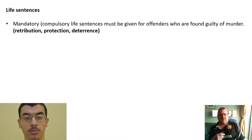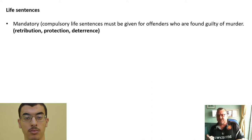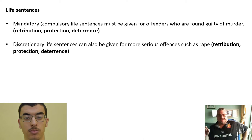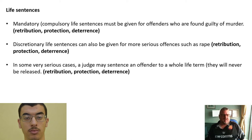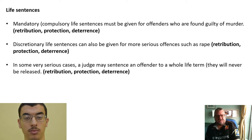Looking at life sentences, there are different types. Mandatory or compulsory life sentences — for instance, if someone is found guilty of murder, the judge must impose a life sentence — bringing in retribution, protection, and deterrence. Discretionary life sentences can be given for more serious offences such as rape, again with retribution, protection, and deterrence. In the most serious cases, a judge may sentence an offender to a whole life term, meaning they'll never be released — that's retribution, protection, and deterrence.